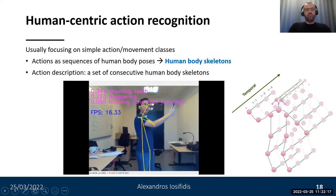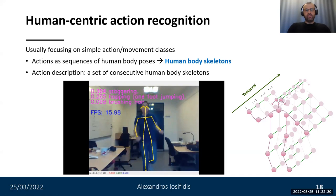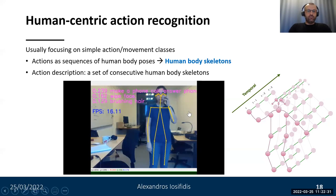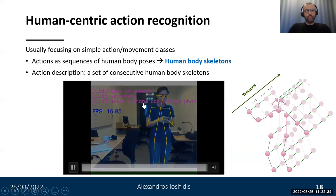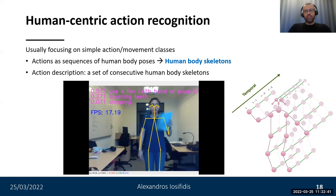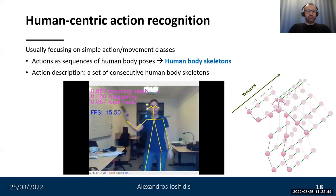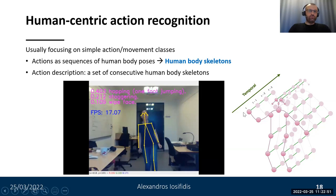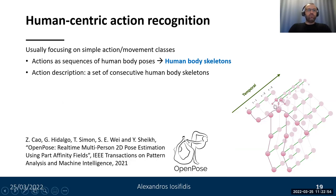Here we can see a demo of our recently proposed human body skeleton-based action recognition methods by our postdoc. At the top left of the video frames, we can see the most probable actions for the specific video frames, along with the softmax scores of the classifier. The skeleton detection method provides a good result and does a good job in providing an accurate skeleton, which is then used to describe the action. One of the most widely used software libraries for human body skeleton detection is OpenPose, and we use this library for extracting the human body poses.